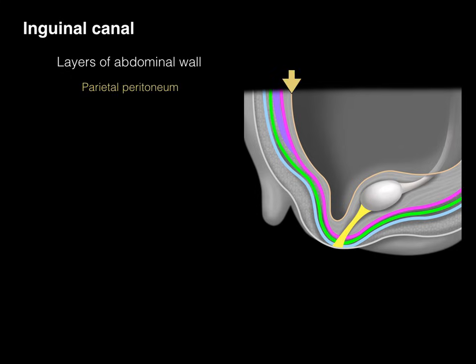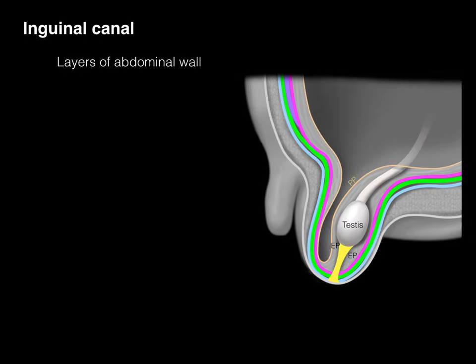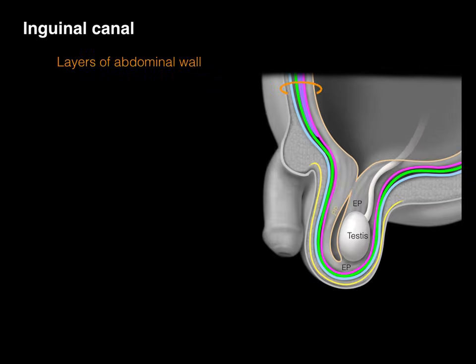Finally, there's our parietal peritoneum — that coelomic sac, mesothelium, that lines the internal wall of the abdominal cavity. So there's our testis. This picture shows the same thing, with all those layers of the abdominal wall layered. As that testis descends, notice it's pulling all the layers of the abdominal wall with it, until finally it's within the scrotal sac.